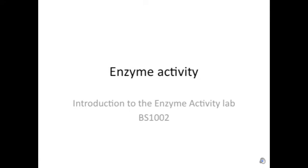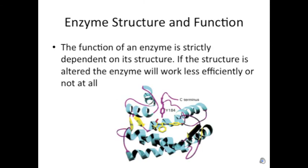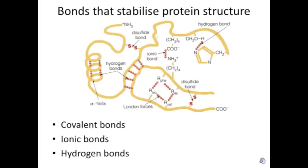This practical is for BS1002 and we're going to explore enzyme activity. The function of an enzyme depends very much on its structure. As you can see here, there are several bonds between both the side chains of a protein and its own backbone to determine its structure. There are ionic bonds, covalent bonds, and other types of bonds such as hydrogen bonds.